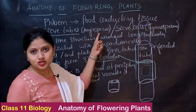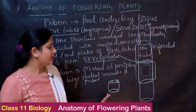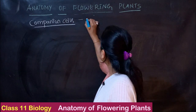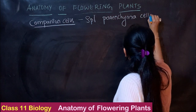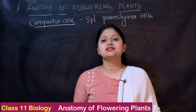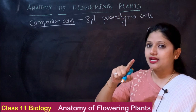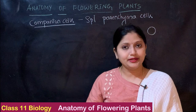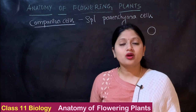So sieve tubes are present in angiosperms and sieve cells are present in gymnosperms. Moving on to the second element — companion cells. Companion cells are specialized parenchyma cells. Every tissue, whether xylem, phloem, parenchyma, collenchyma, or sclerenchyma, has to originate from meristematic tissue.